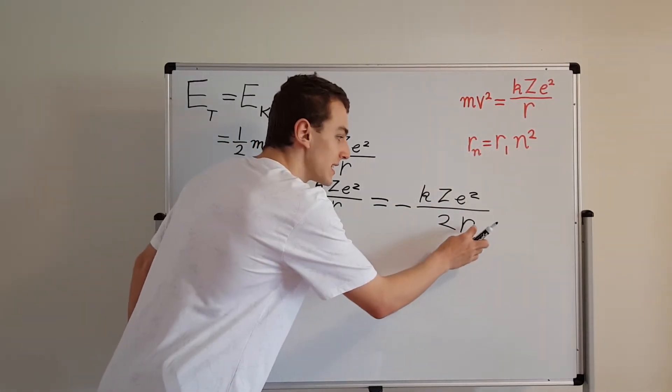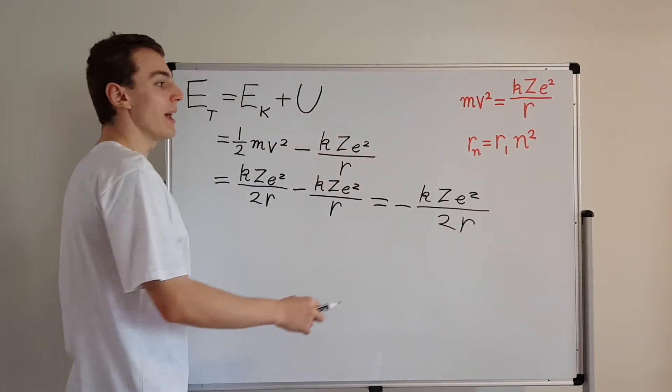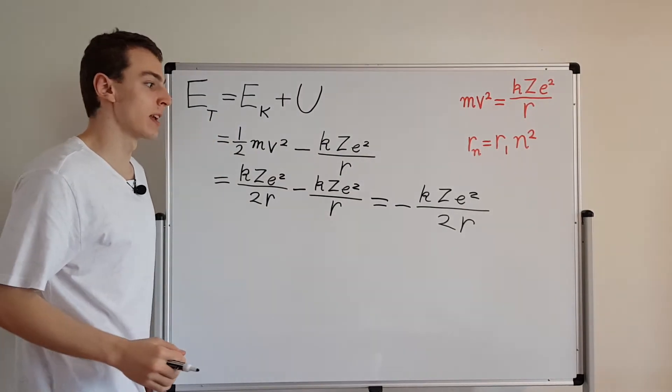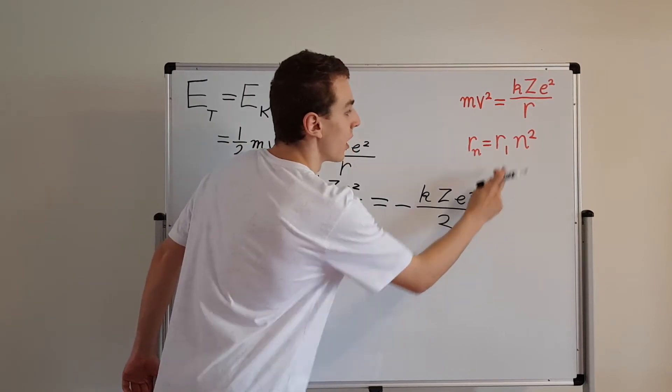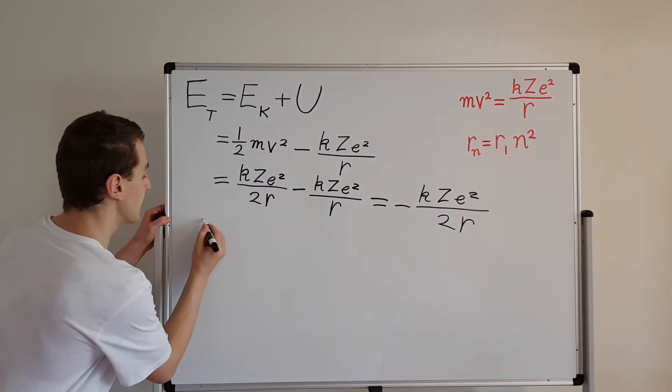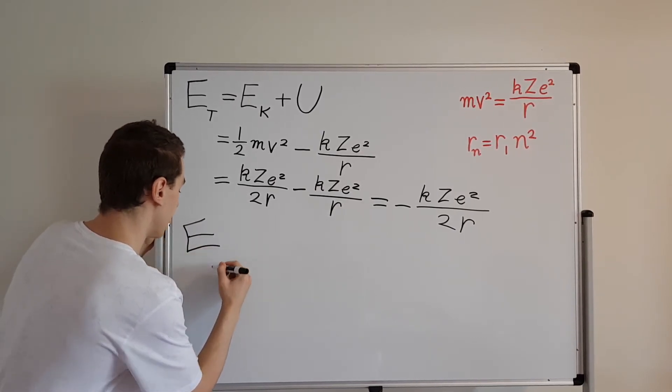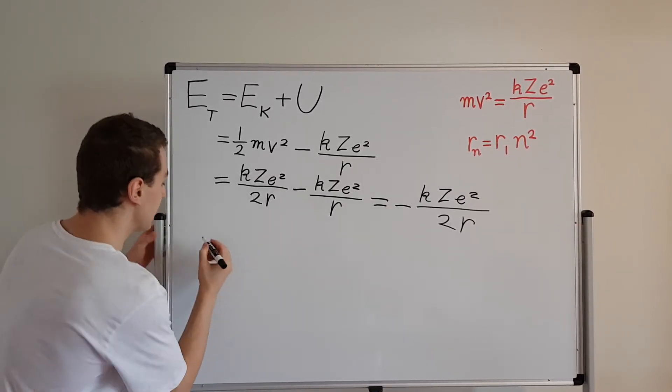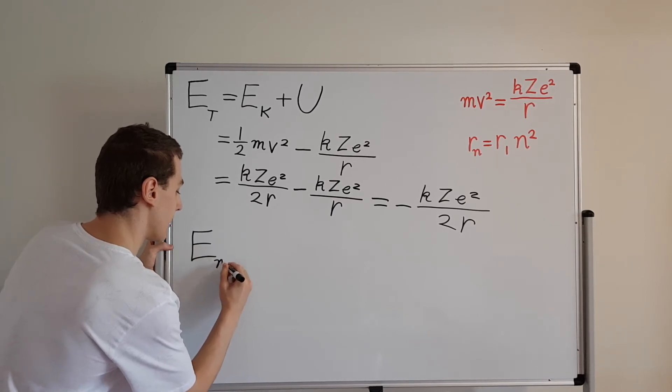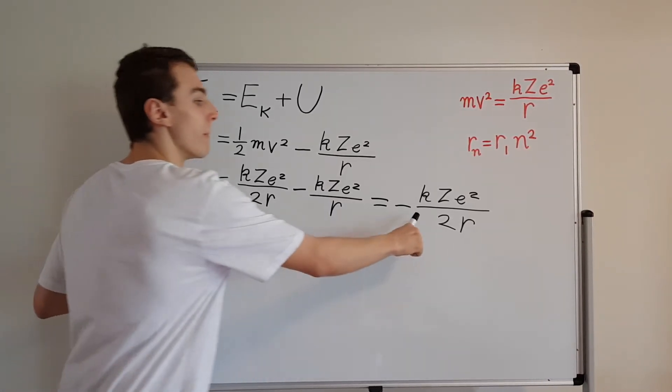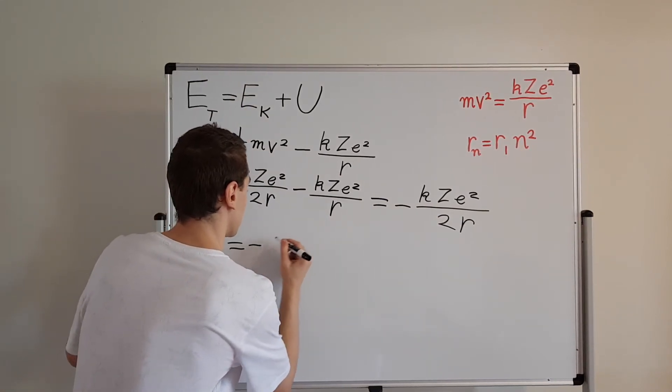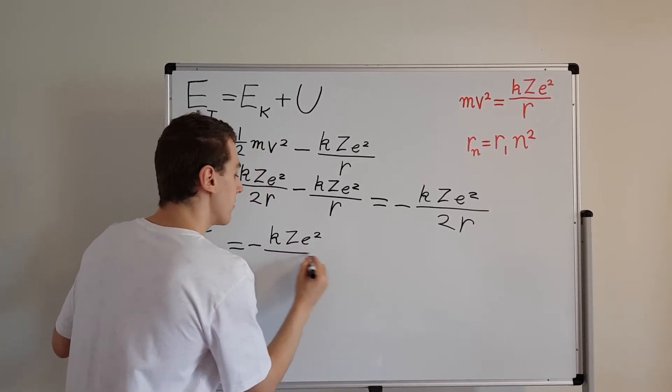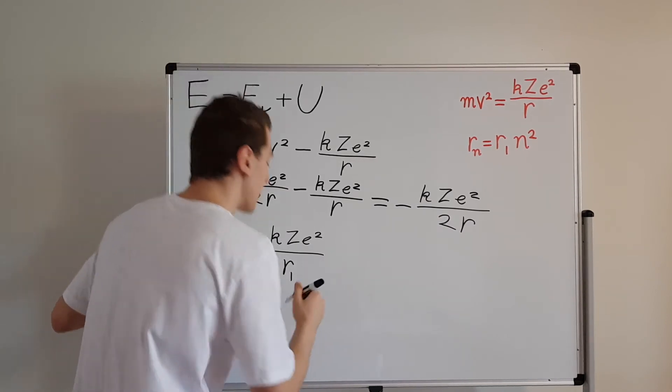But have a look at this. We can actually substitute into this radius a dependence on n because we want the energy in terms of n. We want the nth energy level. So what we can do is in here we can substitute r1 times n squared. And what we can actually see is that the nth energy level, so this is an En, which is the nth energy level, that is equal to minus kZe squared on the top. So it's still that, minus kZe squared on top. And we're going to have 2 times r1 times n squared.